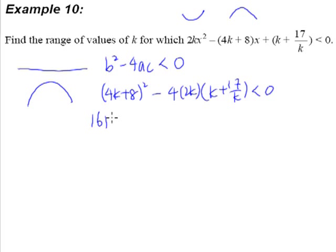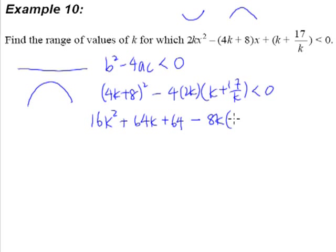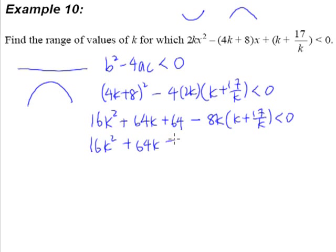So let us do the expansion here. We have 16k² plus — 4 multiplied by 8 gives us 32, and 32 multiplied by 2 gives us 64. So we have 64k plus 64 from the 8 squared, minus 8k multiplied by (k + 17 over k), less than zero. Expanding further: 16k² + 64k + 64 minus 8k² minus 136. The k terms cancel, so this is what we end up with.